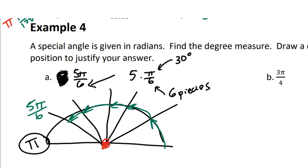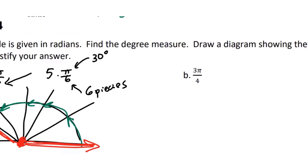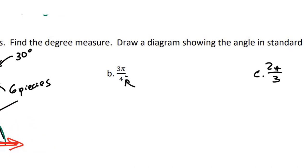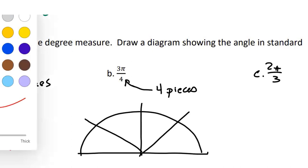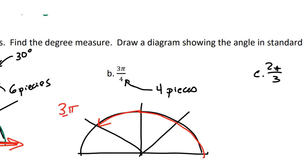When I draw the angle, I have my vertex, my initial side, and my terminal side. If you asked in which quadrant is 5π/6, you would say the second quadrant. For part B, the denominator is 4, meaning we're dividing the semicircle into four pieces — so we're talking about multiples of 45 degrees. We have 3 of those pieces, so we go three-quarters of the way to π: 1, 2, 3. When we draw 3π/4, we place our vertex, draw our initial side and terminal side — and that one is also in the second quadrant.